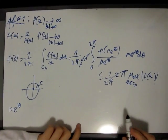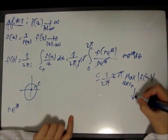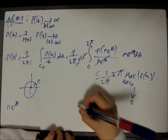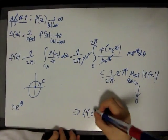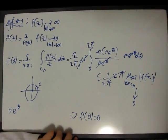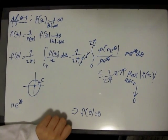Now, of course, when we let R go to infinity, this goes to 0. So, we conclude that F of 0 is 0, which is a contradiction since 1 over any complex number is different from 0.